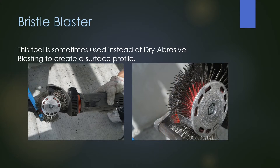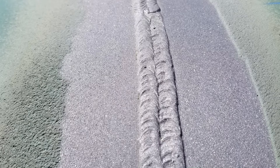There's another method used a lot of times, especially in plants or areas where they don't want grit flying around and interfering with workers and machinery. It's called a bristle blaster. You can get a surface profile with it, but you're not going to get the same type of angular surface that you get from abrasive blasting media blown at high speed. Bristle blasters are pretty much a secondary method.